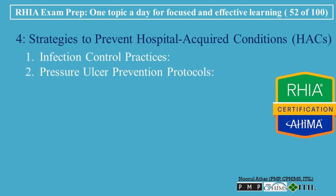Pressure Ulcer Prevention Protocols: Hospitals should develop protocols for preventing pressure ulcers, including regular patient repositioning, use of pressure-relieving devices, and ensuring patients receive proper nutrition and hydration. Early detection and treatment of skin breakdown are also essential in preventing the development of severe ulcers. Fall Prevention Programs: Implementing fall prevention programs can reduce the risk of patient falls and related injuries. These programs often include fall risk assessments, bed alarms, and mobility assistance for at-risk patients. Educating both staff and patients about fall prevention is critical.